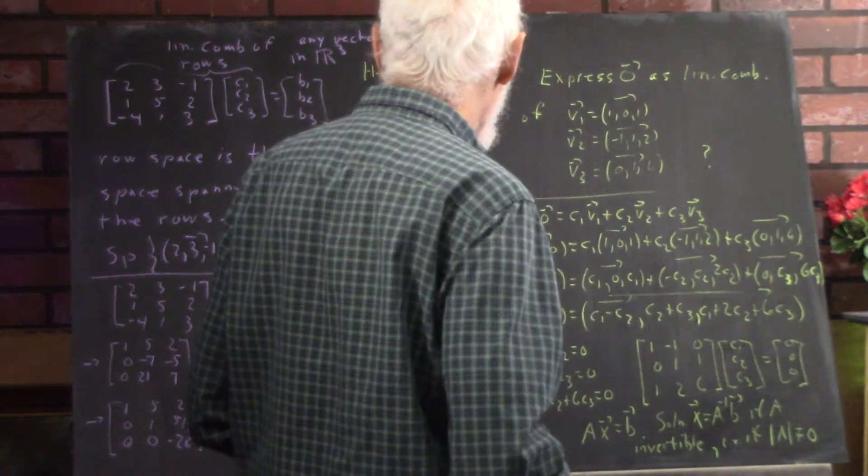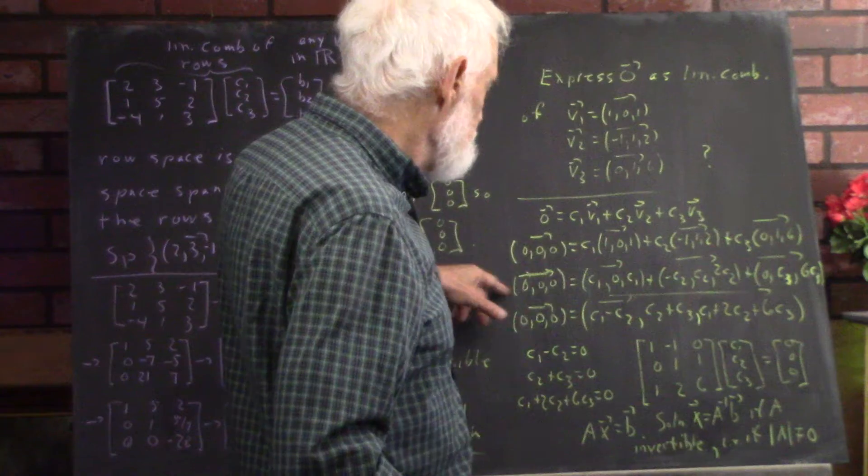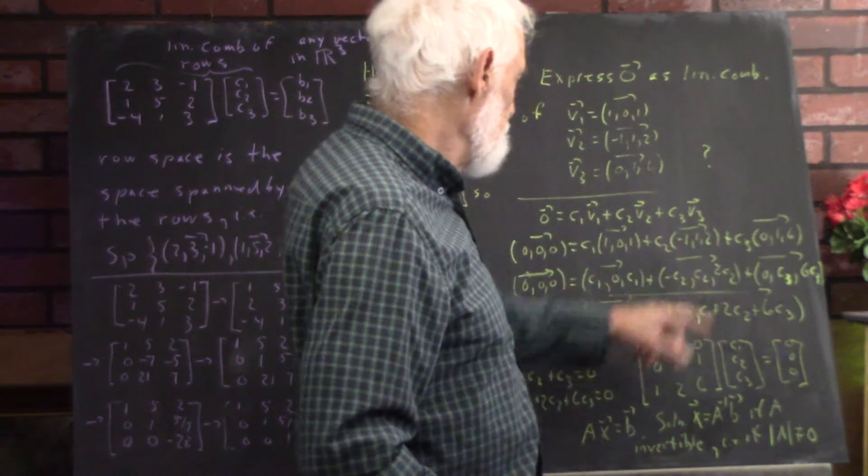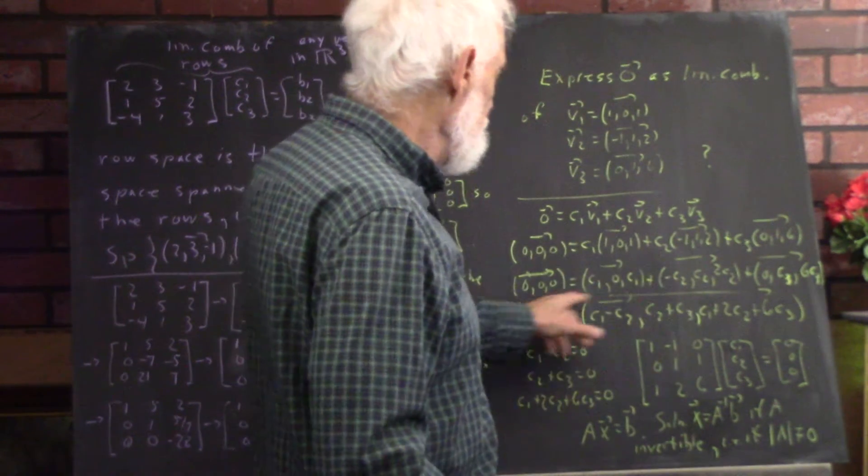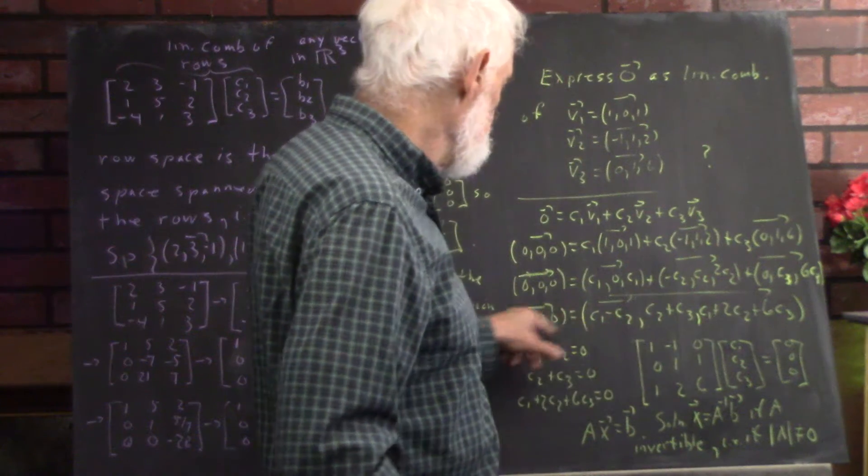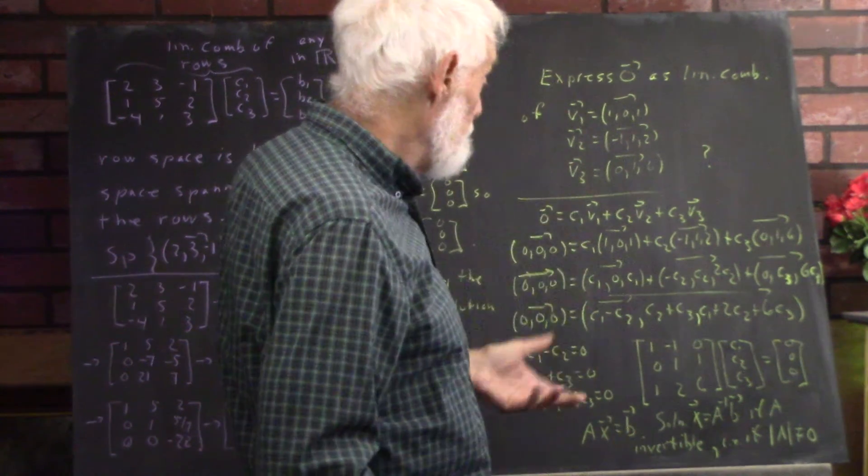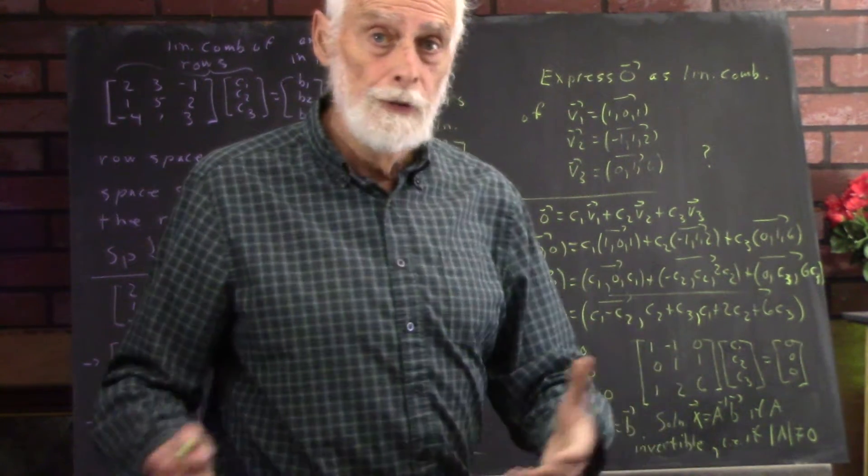Okay, so again, we'll apply through by C1, C2, C3 and add the three vectors to get this and we see that we end up with three simultaneous equations and three unknowns.